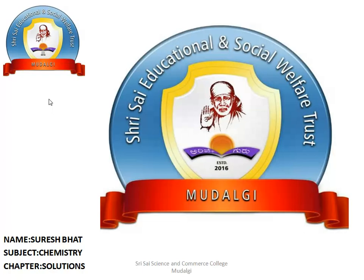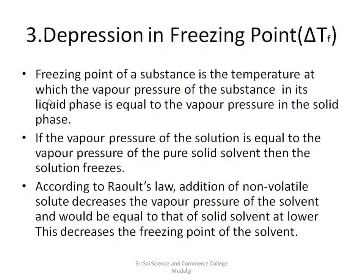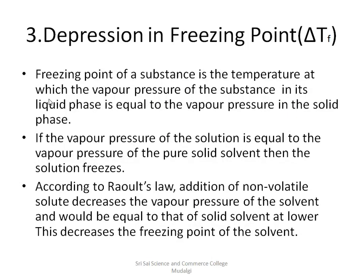The next colligative property I am going to discuss is depression in freezing point, represented by Delta TF. If you have missed any of the previous concepts related to colligative properties, you can go through the previous videos. In this class I will be discussing the third type of colligative property called depression in freezing point, represented by the symbol Delta TF.